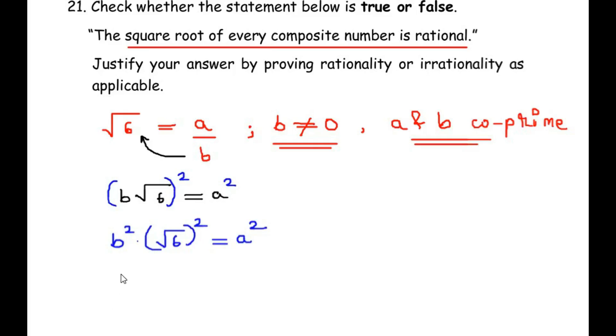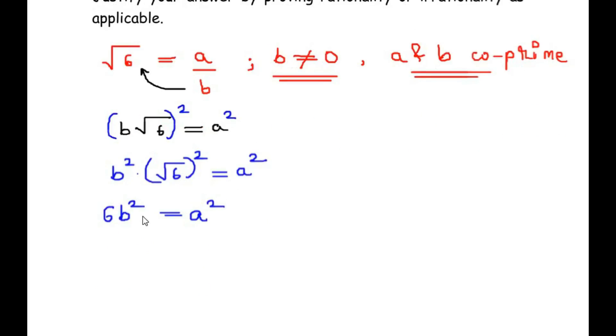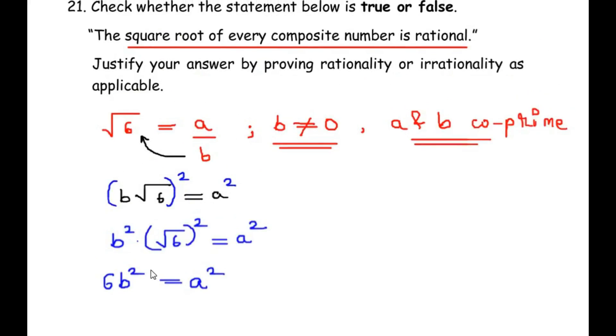Let us simplify this further. We get b squared and square root of 6 squared gives us 6 itself, so we get 6b squared equals a squared. Now the factors of 6 were 1, 2, 3, and 6.